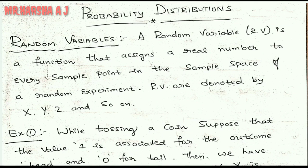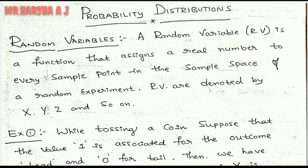A random variable is a function that assigns a real number to every sample point in the sample space of a random experiment. Random variable is generally denoted by capital X, Y, Z and so on. It represents a function where the domain is always a sample space and the range represents real numbers. That is called a random variable.